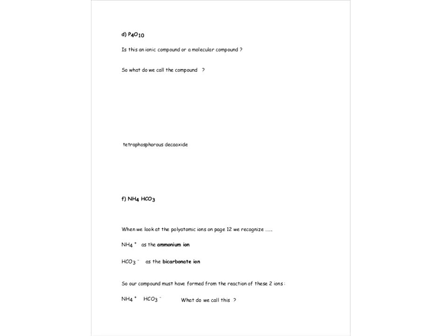The next one is P4O10. Is it ionic or molecular? It's a molecular compound. What do we call it? Tetraphosphorus — because there are four phosphorus atoms — deca oxide, because there are ten oxygens. So that one's not too bad. We just have to memorize all those prefixes: tri, tetra, deca, and all that.